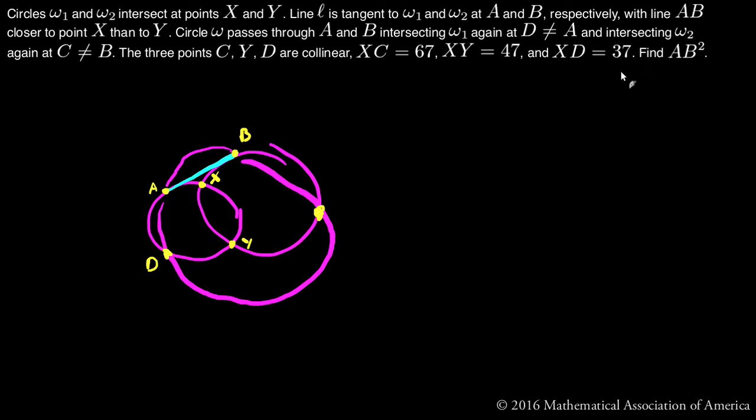Okay, so now they give us a few segment lengths. They say that XC equals 67, XD will be 37, and they give us XY is 47.